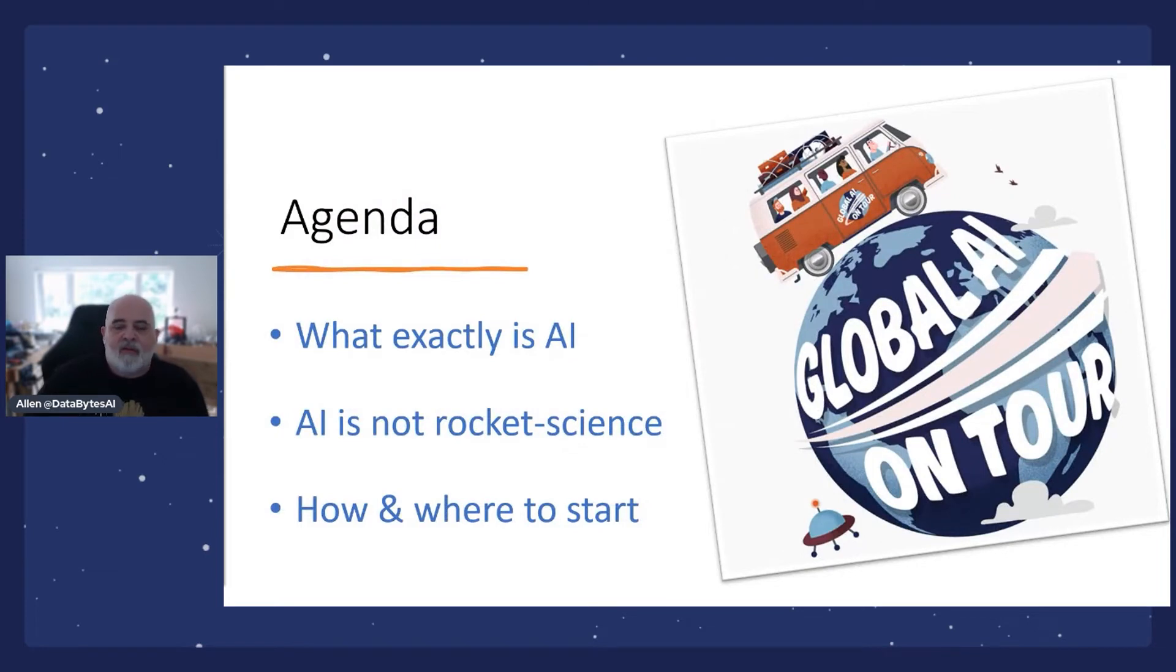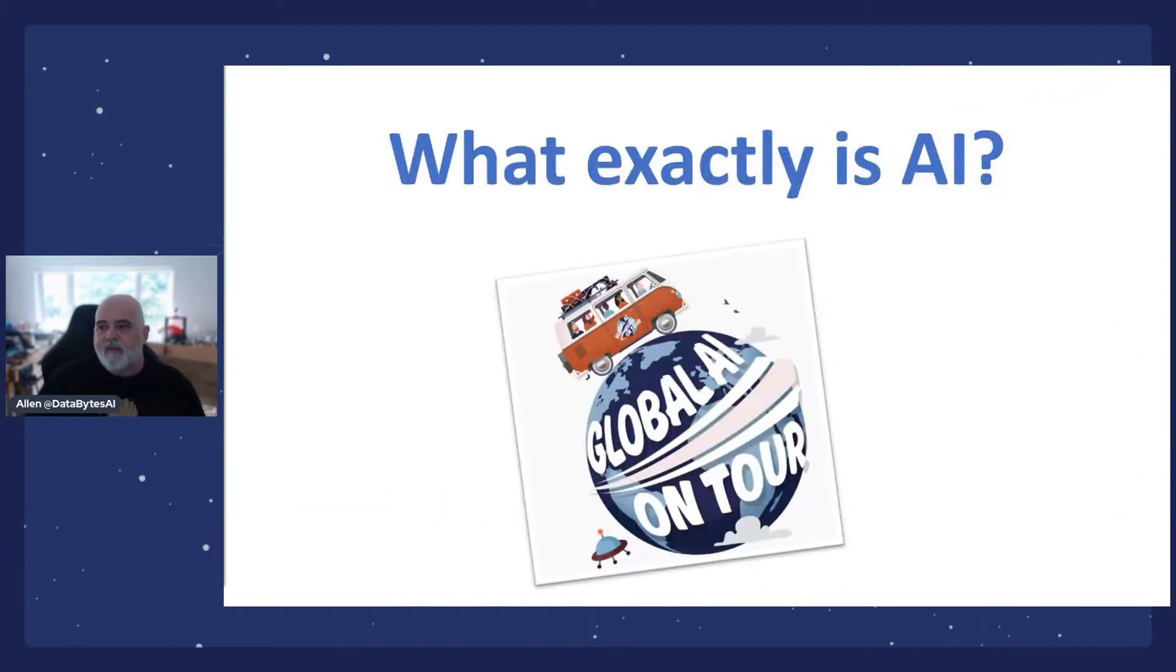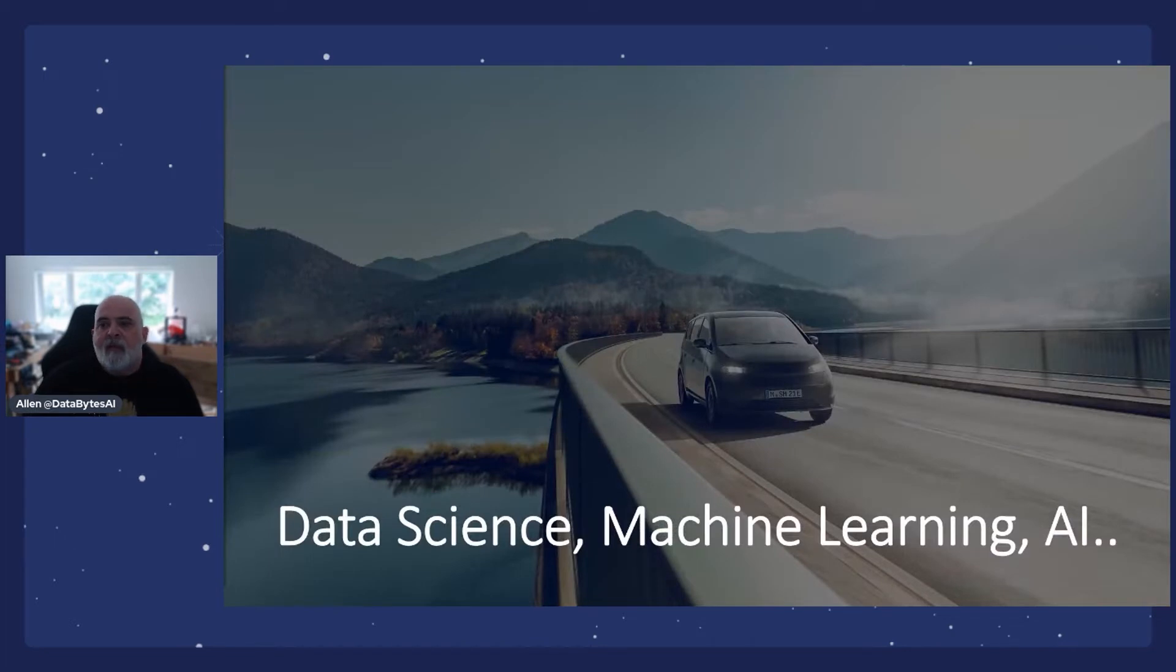The agenda for this talk is going to cover three main topics. We're going to talk about what exactly is AI and how it's not rocket science and how you can use it daily and how to learn and where to start with AI in your daily work. Let's get started by looking at AI itself and understanding what it is and what it isn't and what differentiates it from other technologies that are mixed in with it, such as data science and machine learning.